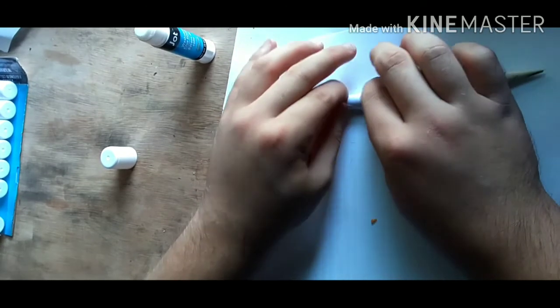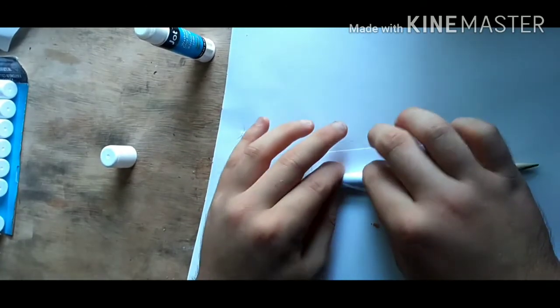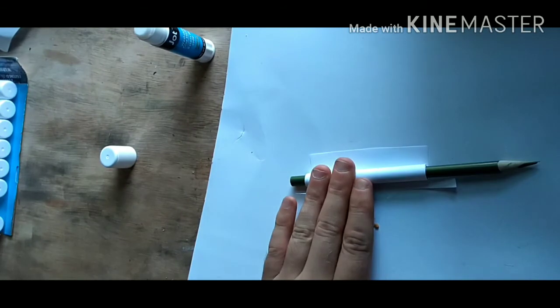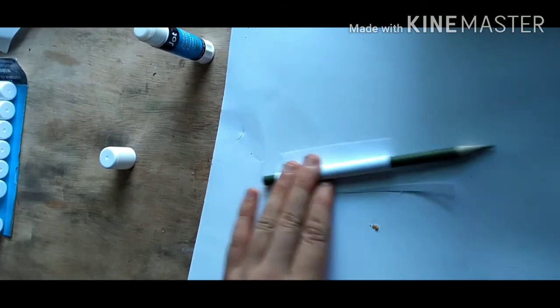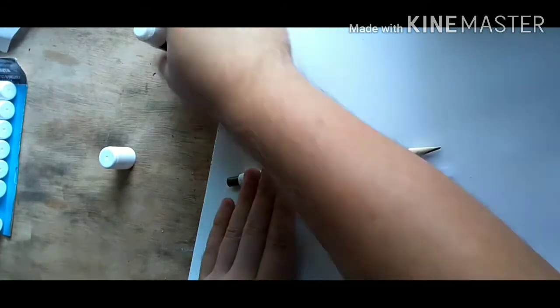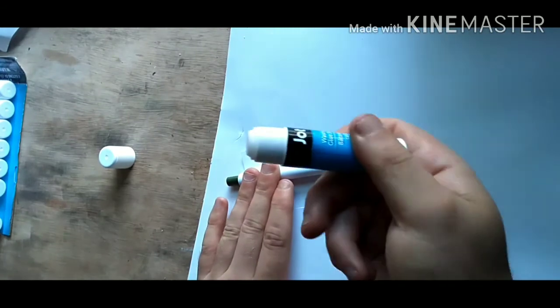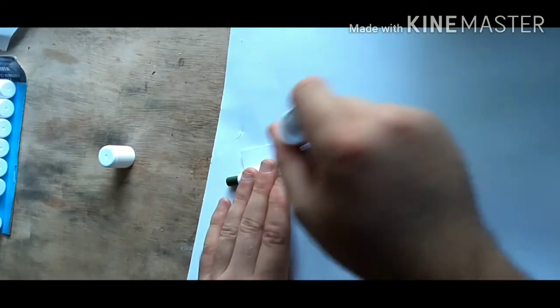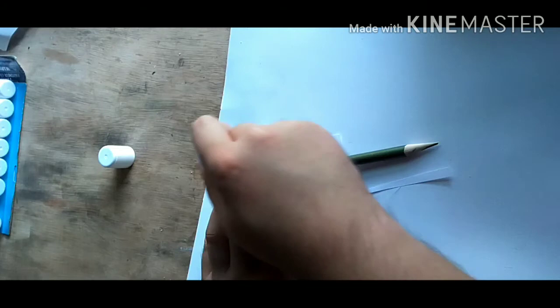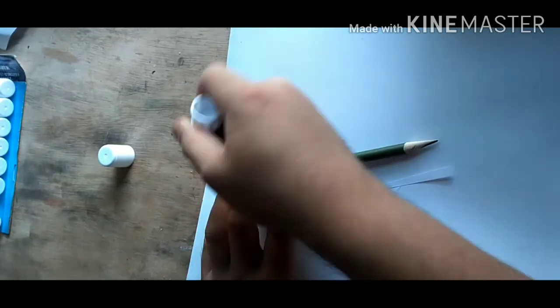Here we go. Now, you take the glue stick. And for the end of the paper, take your glue stick right here. Do it like three or four times.